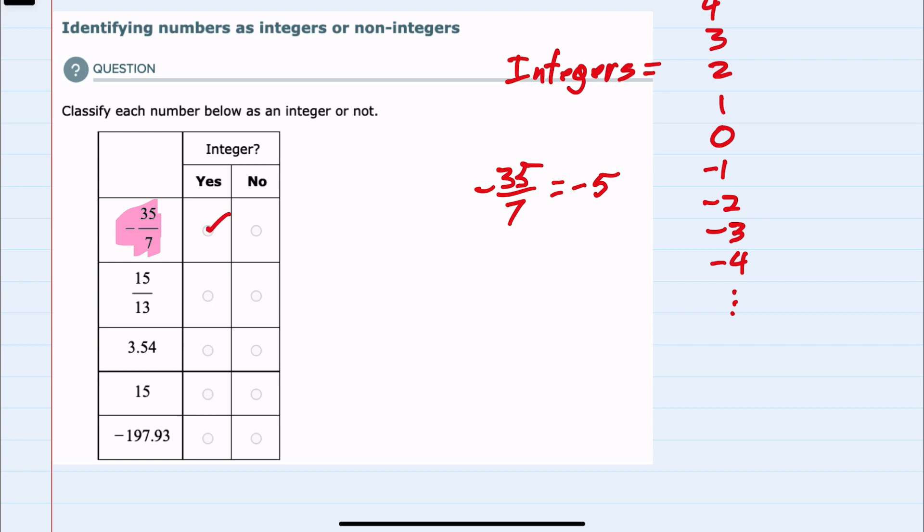The second fraction, 15 thirteenths, will not simplify to an integer, so it is not an integer.